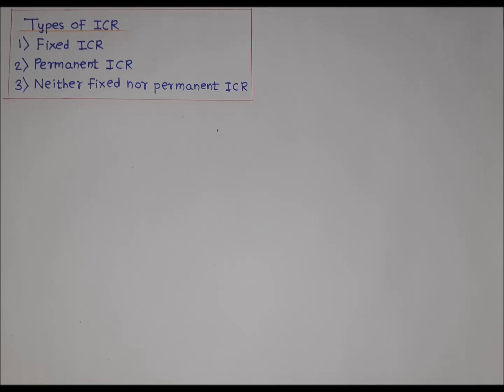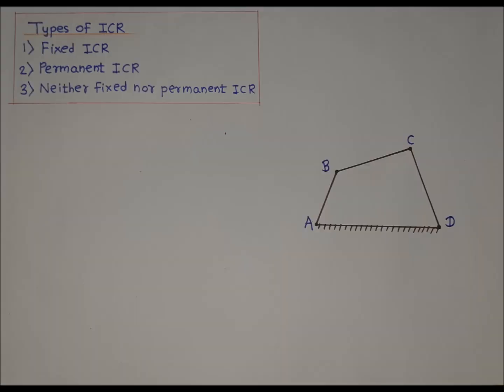In this video we will go over the types of ICR and we will also locate all ICRs for the shown configuration of a four-bar mechanism. There are three types of ICR: fixed ICR, permanent ICR, and neither fixed nor permanent ICR. We will discuss these ICRs on screen. A four-bar mechanism is shown with four links: AB, BC, CD, and AD.